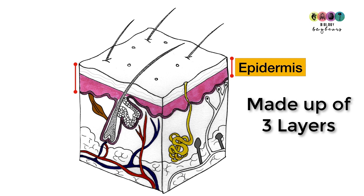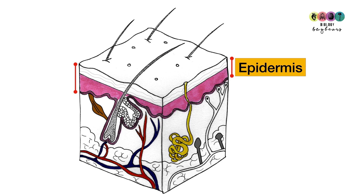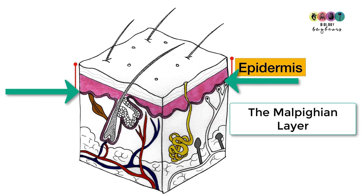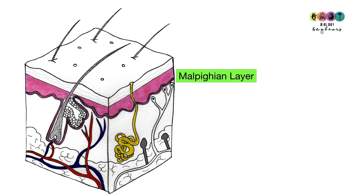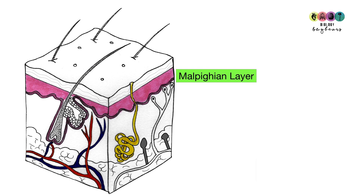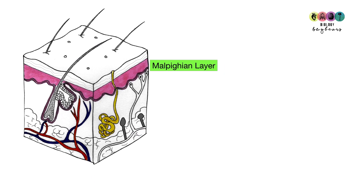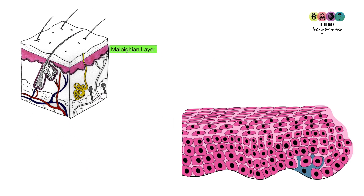Starting from the inside out, we begin with the malpigian layer, the innermost layer of the epidermis. You can see it in the picture here — it's a dark pink line that undulates, going up and down, wrapping around the hair shaft. It's not a flat line of cells.